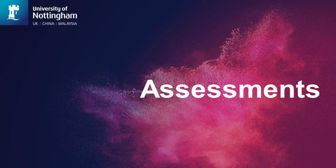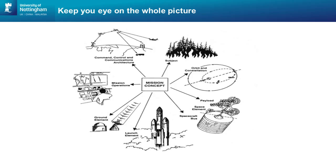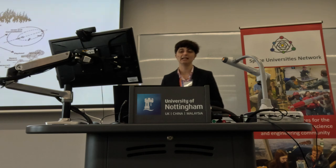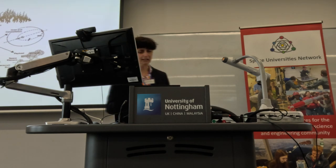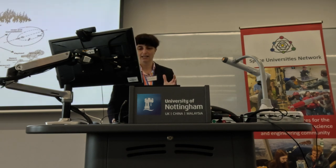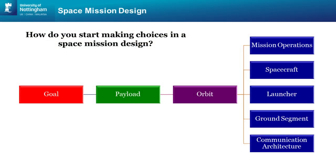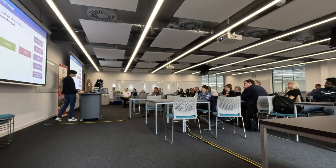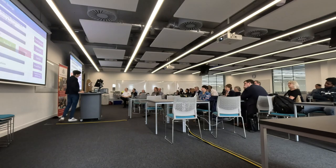In terms of assessment, the key idea is to try to involve the student in having an overall idea of all space missions — not just considering the satellite, but also the other segments. Starting from Introduction to Space, they think about the goal of the mission, what the payload will be, and decide the orbit to satisfy the mission. After that they start to identify the mission operation, the spacecraft, the launcher, the ground segment, and the communication architecture.